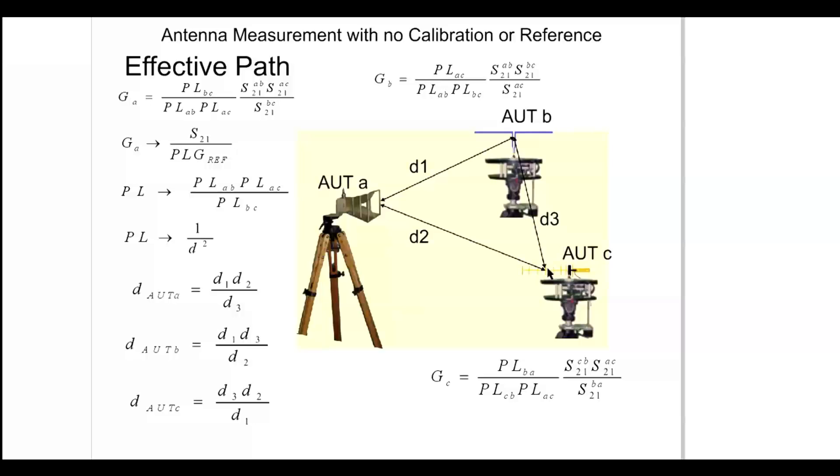The path loss proportional to the actual distance squared yields an effective path loss distance for AUT A as distance 1 times distance 2 divided by distance 3. If we interchange the subscripts we can easily derive the equivalent distances for any of the three antennas.